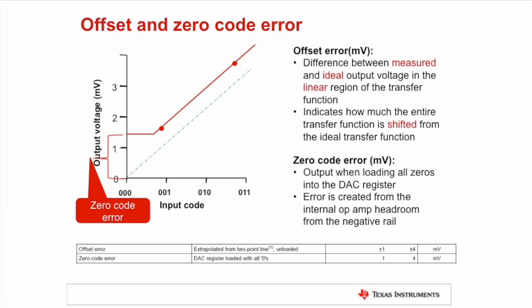In place of Zero Code Error, the MDAC will usually provide a leakage current specification that describes the current that leaks to its output, Iout, when all zeros are loaded into the DAC data register.